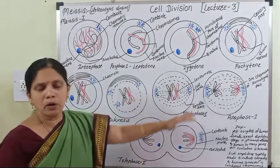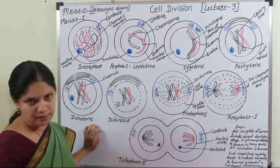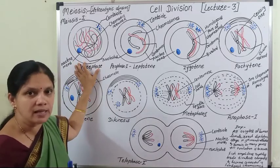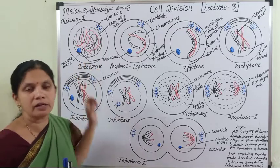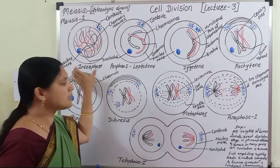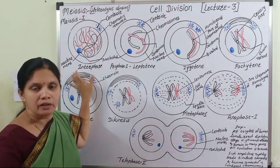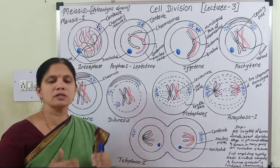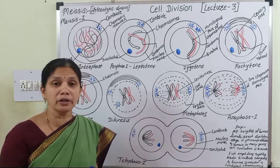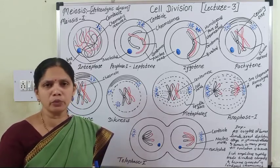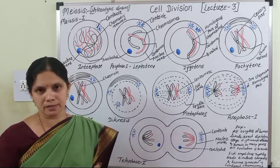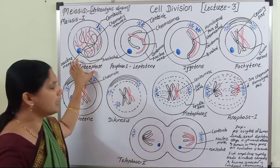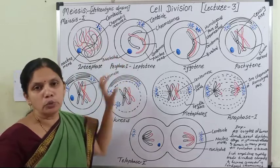After the completion of interphase — the preparatory phase where protein synthesis, DNA replication, and cell organelle number increase — the cell is ready for M phase. The M phase here is meiosis. After completion of interphase, the cell enters into meiosis I and karyokinesis I.